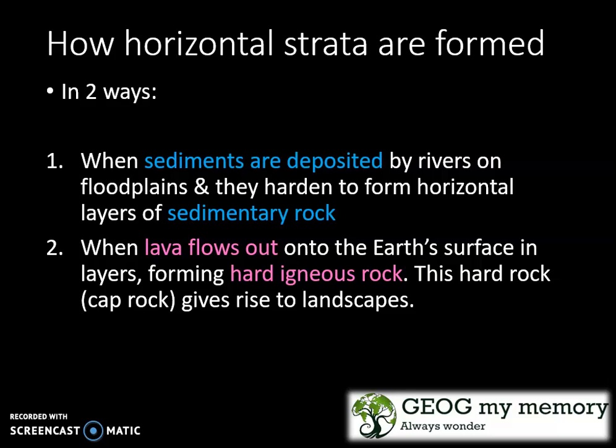The first way is when sediments are deposited by rivers on flood plains and they harden to form horizontal layers of sedimentary rock. The second way is when lava flows out onto the earth's surface in layers, forming hard igneous rock.